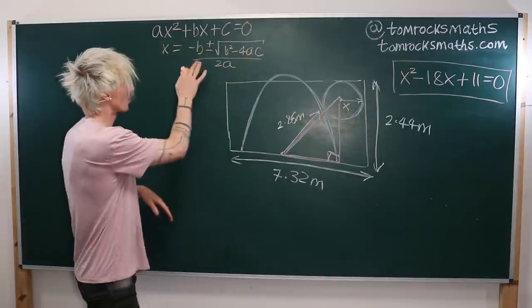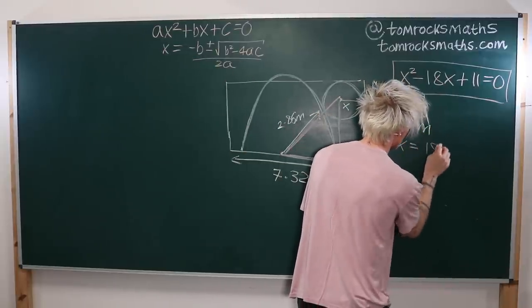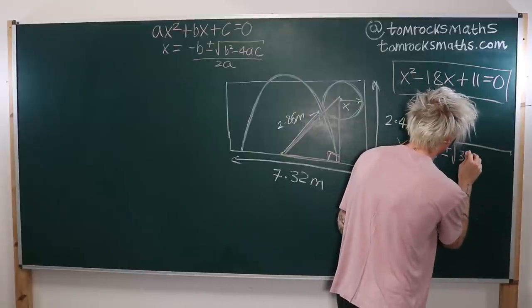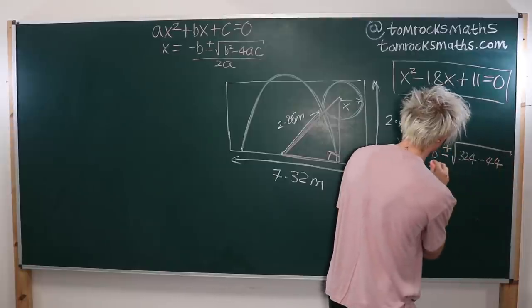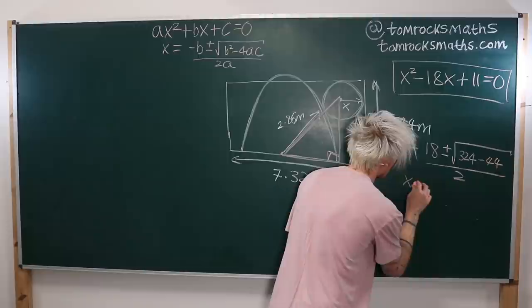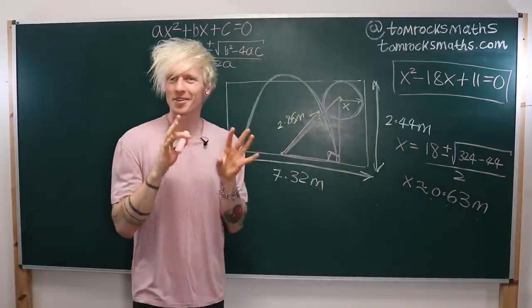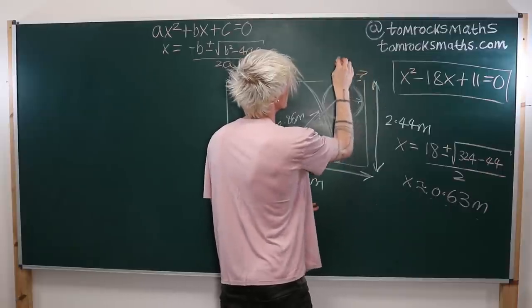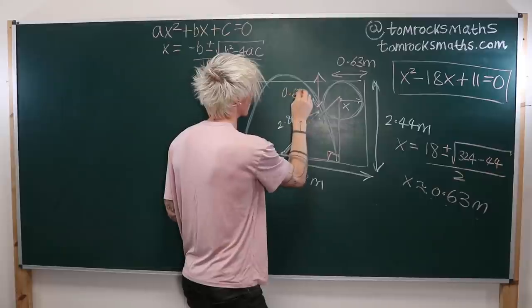Using the quadratic formula with a = 1, b = −18, c = 11: x = (18 ± √(324 − 44)) / 2. Plugging into a calculator gives x ≈ 0.63 meters. So the perfect penalty placement is exactly 0.63 meters inside the post and 0.63 meters below the crossbar.